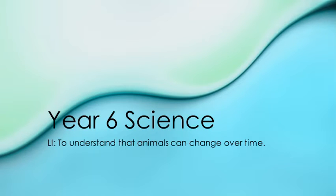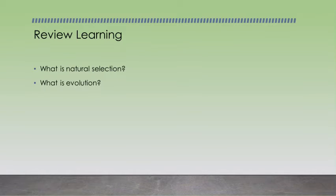Once you have completed that, you are going to look at science and how animals can change over time. The first thing you need to do is think about reviewing your learning. What is natural selection and what is evolution? You should have done some work on Charles Darwin last week to give you a bit more help with it.